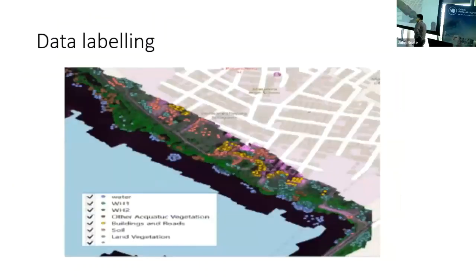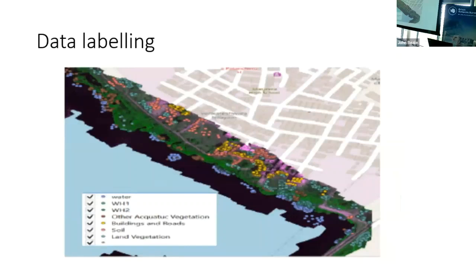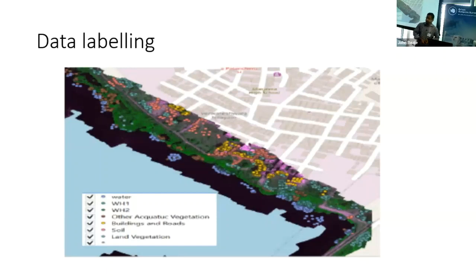One key challenge is data labeling. We have all the historical satellite data, but labeling it for machine learning is a bottleneck. Instead of manually creating polygons, which takes hours, we take random samples from the target area and grow those labels using machine learning — specifically random forest — verifying results with manually created polygons. This approach gives quite good results and partially solves the data labeling problem.